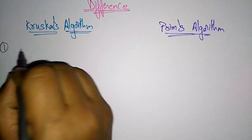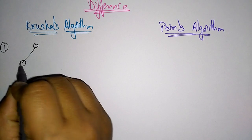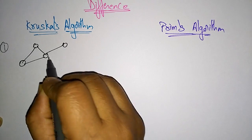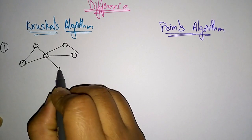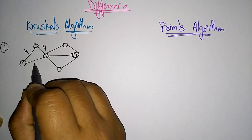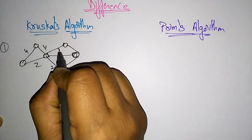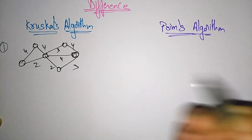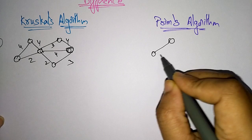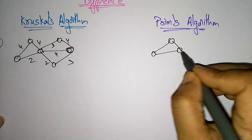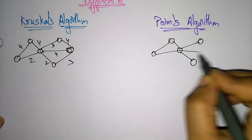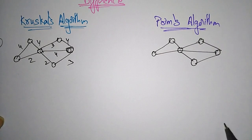So let us take a given network. The weights for this network are 4, 4, 2, 2, 4, 3, 4, 3. For Prim's also I am taking the same network, and we will observe finally what is the structure — whether Prim's and Kruskal's give you the same structure or the same minimum spanning tree weight.